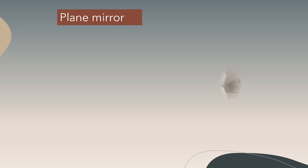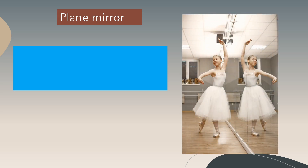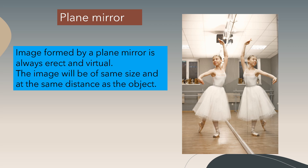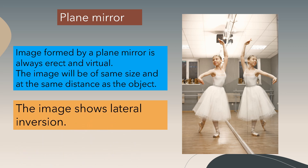Let's start with a plane mirror. We all know that the image formed by a plane mirror is always erect and virtual. The image will be of the same size and at the same distance as the object. The image shows lateral inversion. When you raise your left hand in front of a plane mirror, the image inside the mirror shows the right hand — that is lateral inversion.